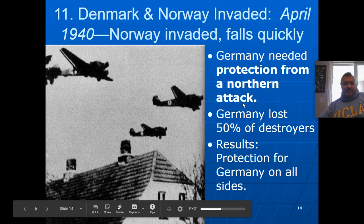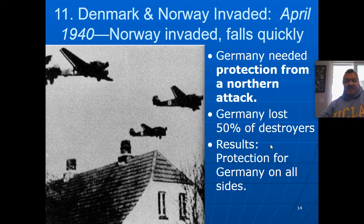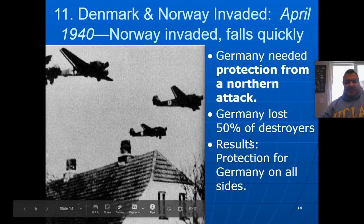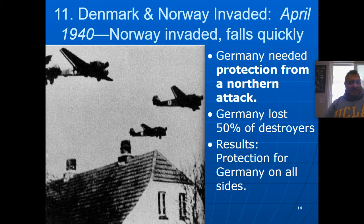Germany was seeking protection from a northern attack, and they achieved that. But they lost 50% of their destroyers because, just before the attack, the British put a bunch of mines in the North Sea. When the German destroyers came out, many ran into them and got destroyed. When a ship runs into a mine, there's a button on it — once the button gets unpressed, boom. Mines can remain active a long time because they're passive.